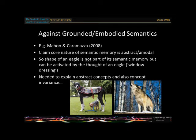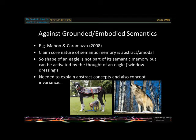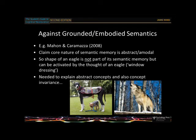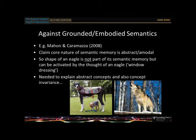Others argue that semantic memory really is about abstract amodal conceptual networks of features. Researchers like Mahon and Caramazza would say the shape of an eagle is not part of its semantic memory — they refer to it as 'window dressing.' On their view, amodal concepts activate perceptual images as a byproduct, but semantic memory itself is not stored in perceptual codes.